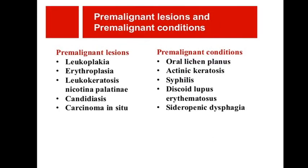Now we'll give examples of each. Examples of pre-malignant lesions include leukoplakia and erythroplakia. Examples of pre-malignant conditions — which are not lesions — include oral lichen planus, actinic keratosis, syphilis, discoid lupus erythematosus, and sideropenic dysphagia.